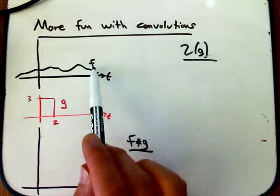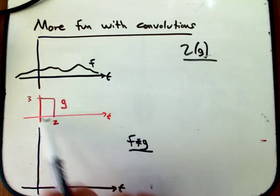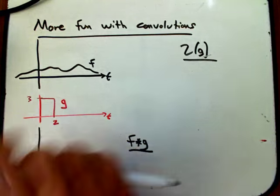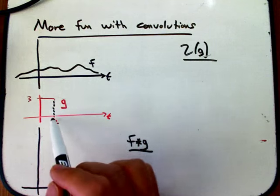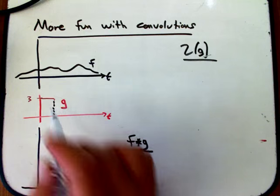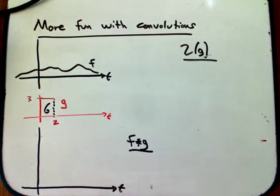So here's a function f. Here's a function g, which is intentionally chosen to be a simple version of a little window function. But now with not having area 1, and in fact having area 6.